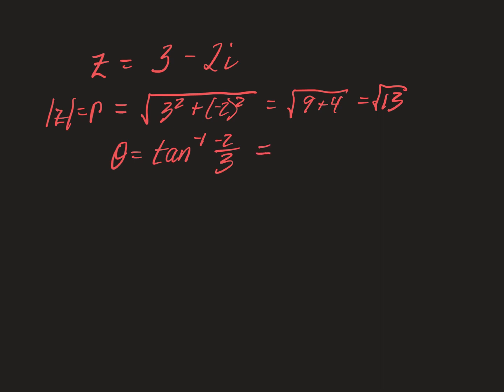This is not an exact form. For 3 minus 2i, we go 3 out and negative 2 down, so it's in the fourth quadrant. The angle we want is a fourth quadrant reference angle. The inverse tangent of negative 2 thirds — punching that into the calculator in radian mode — gives approximately negative 0.588.